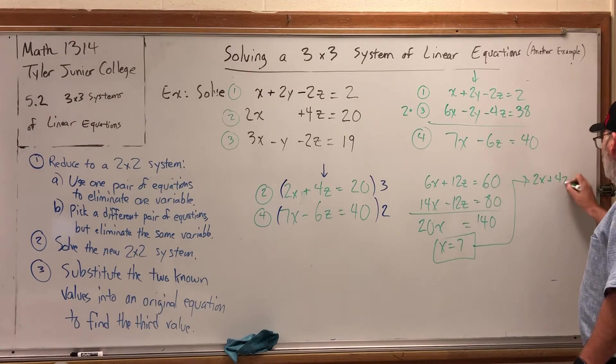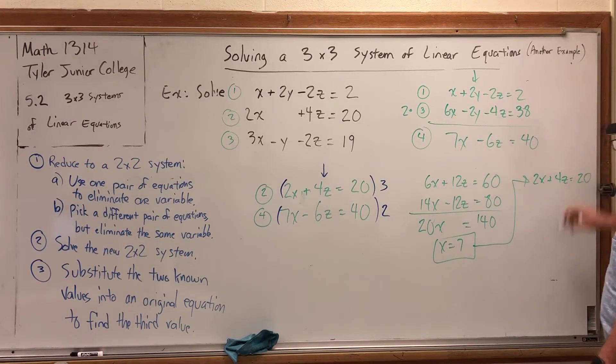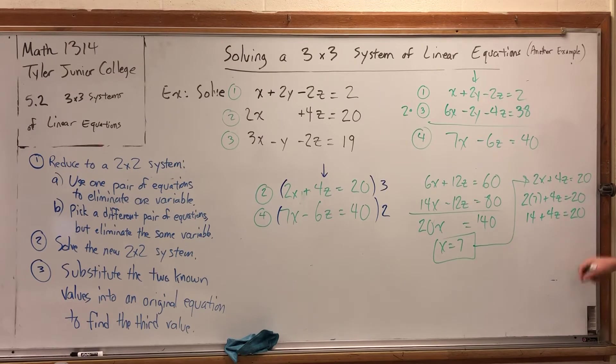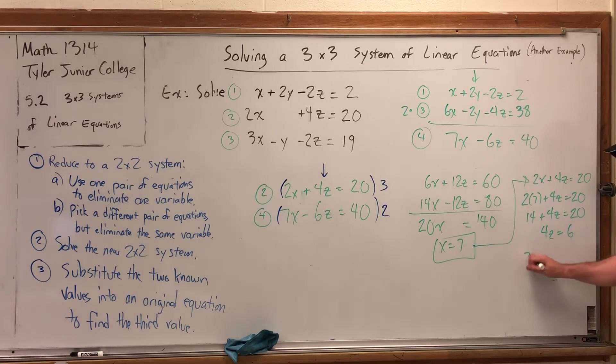2x plus 4z is equal to 20. But the x is 7. So 2 times 7 plus 4 times z is equal to 20. 2 times 7 is 14. Plus 4z is equal to 20. Subtract 14 to get 4z equals 6. And divide both sides by 4 to get z equals 6 fourths.